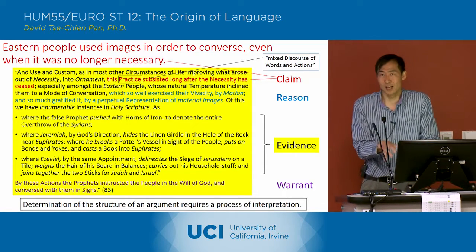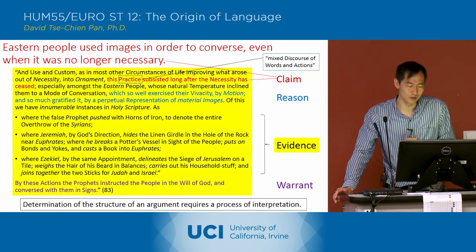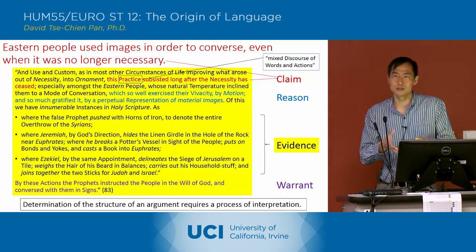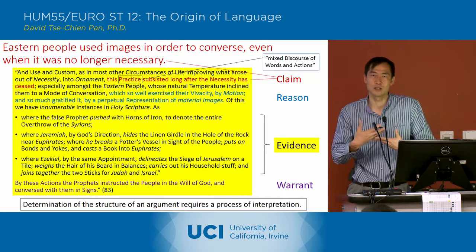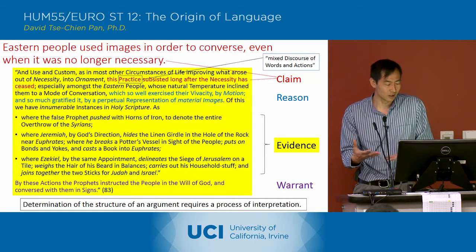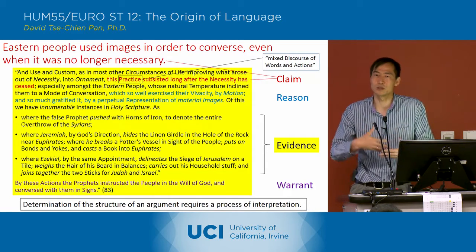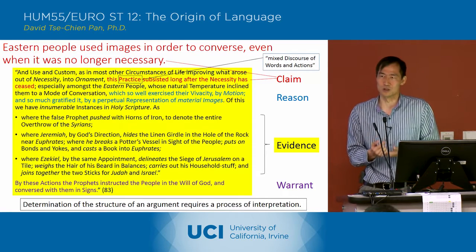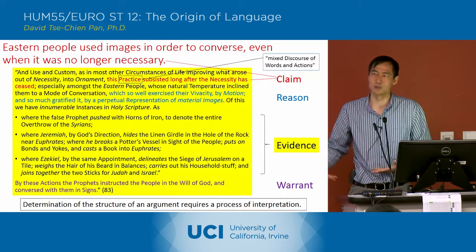And finally, right after that, he has his warrant. He says: 'By these actions, the prophets instructed the people in the will of God and conversed with them in signs.' He's saying we can interpret this evidence as showing that prophets are able to better instruct people in the will of God by using signs, and that they're able to communicate better with people by using these types of images rather than just using prosaic, literal speech.